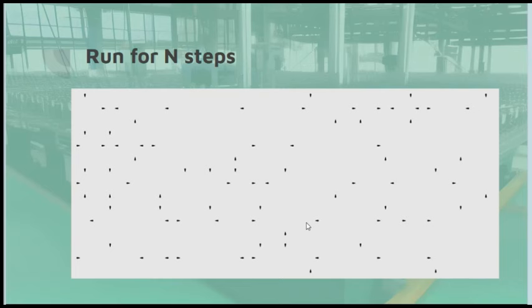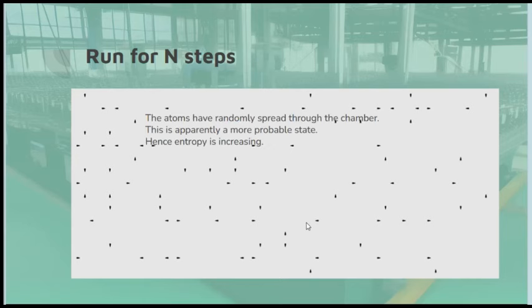In fact, it was sufficiently good that we could pass sound waves through this gas. We could model a loudspeaker at one end and a microphone at the other, and we could pick up the sound going through it. Because the hardware was so fast, we had to run it about a thousand times slower than the hardware was designed for, but you could do it. The atoms have gone through the gas and the entropy has increased. This is apparently a more probable state, as predicted by the entropic arrow of time.